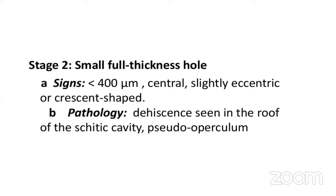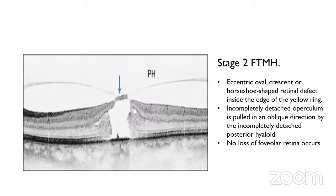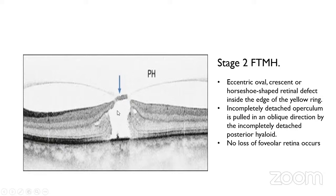Stage 2 is a small full thickness hole, size less than 400 microns, which is central, slightly eccentric, or crescent-shaped. There is a dehiscence in the roof of the cystic cavity resulting in a pseudo-operculum — an eccentric oval, crescent, or horseshoe-shaped retinal defect inside the edge of the yellow ring with an incompletely detached operculum. The posterior hyaloid membrane is still attached to the roof of the pseudocyst at one end. There is a full thickness defect but no loss of foveolar retina.